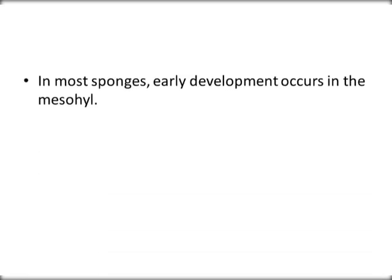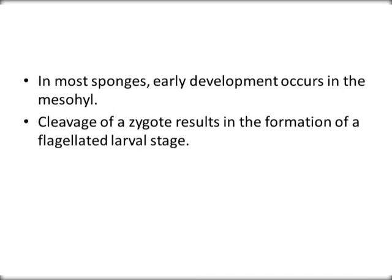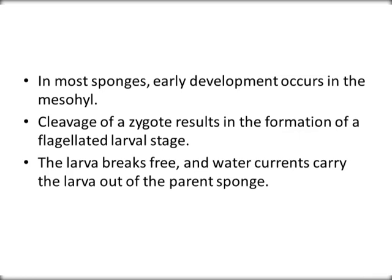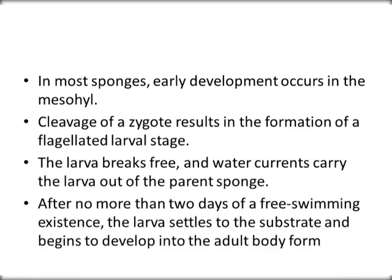In most sponges, early development occurs in the mesohyl. Cleavage of the zygote results in the formation of a flagellated larva stage. The larva breaks free and water currents carry it out of the parent sponge. After no more than two days of free-swimming existence, the larva settles onto a substrate and begins to develop into the adult body form.